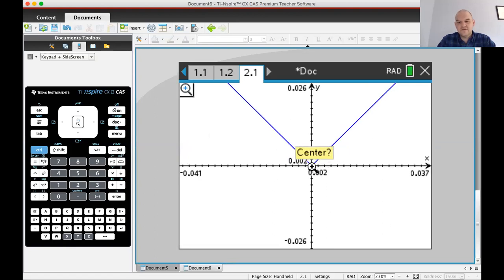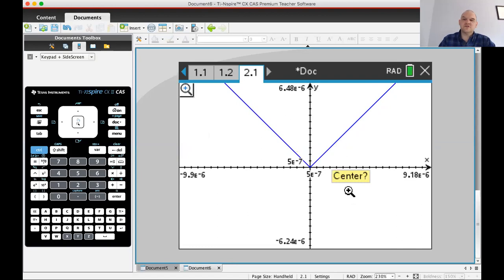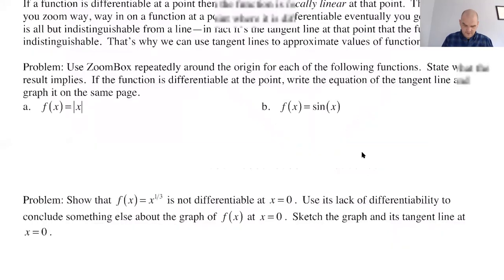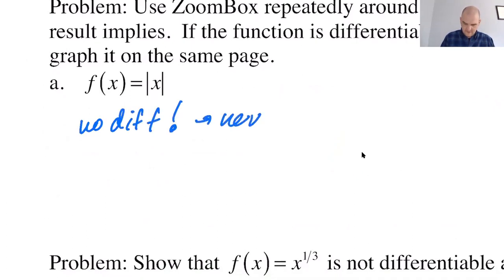No matter how much I zoom in on the absolute value of X, look at the scale — those X values are really small. If you get right on the center, it just keeps going. Absolute value of X is always going to have a sharp turn; it's never going to flatten out. Because the derivative doesn't exist there, there is no tangent line — it never becomes linear. This function is not differentiable, so it never becomes locally linear.